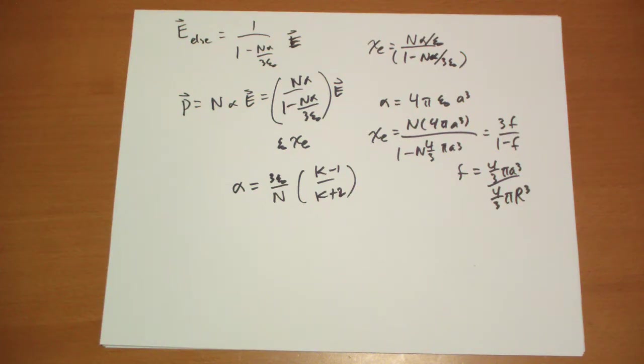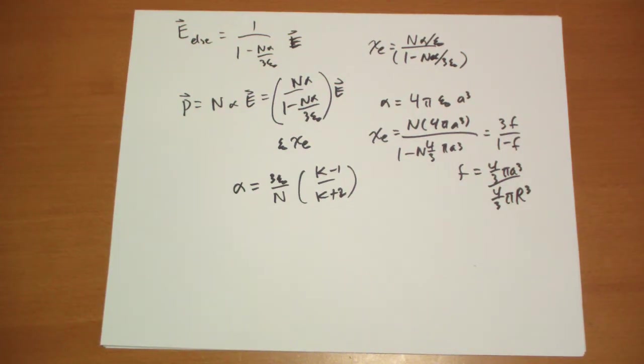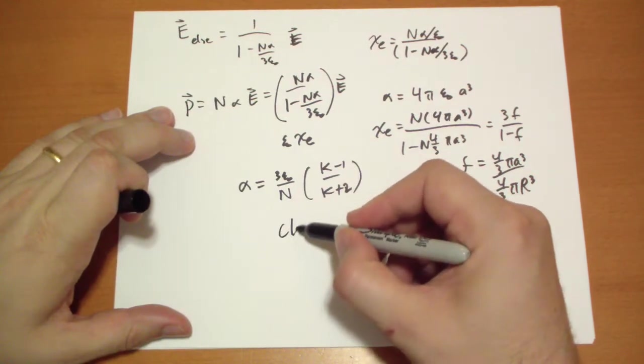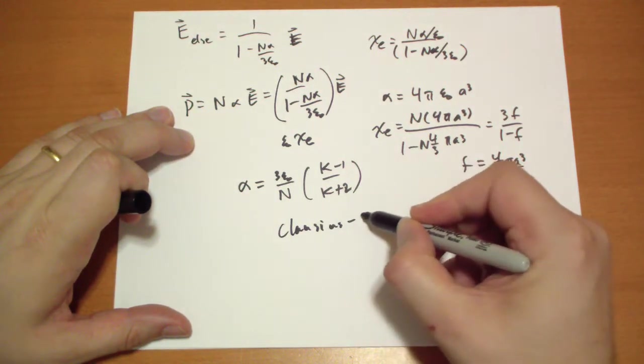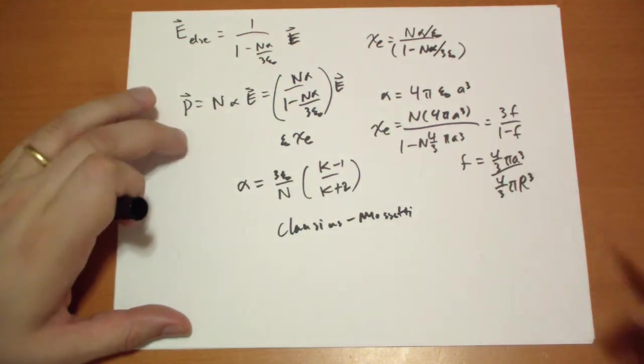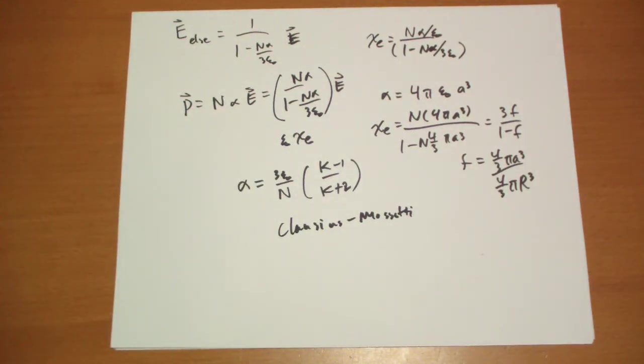This equation is known as the Clausius-Mossotti formula. Of course, it's in your book. That's where I'm getting it from. And in optics, it's called the Lorentz-Lorenz equation.